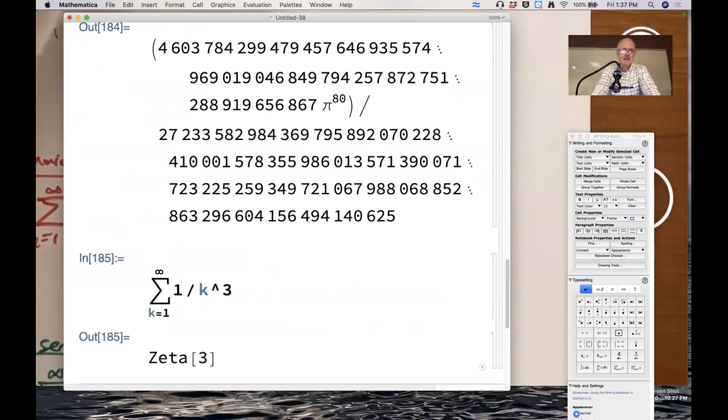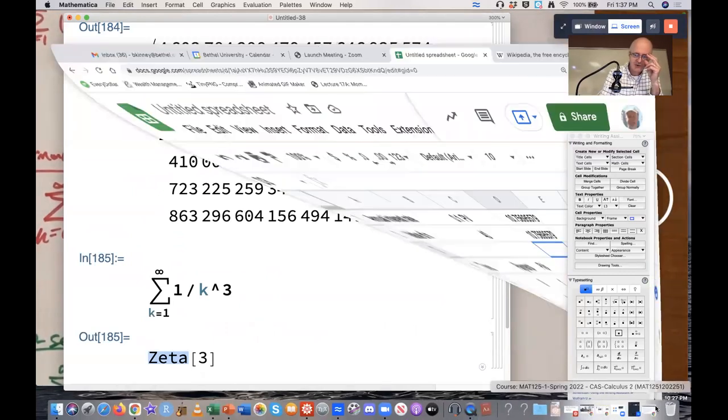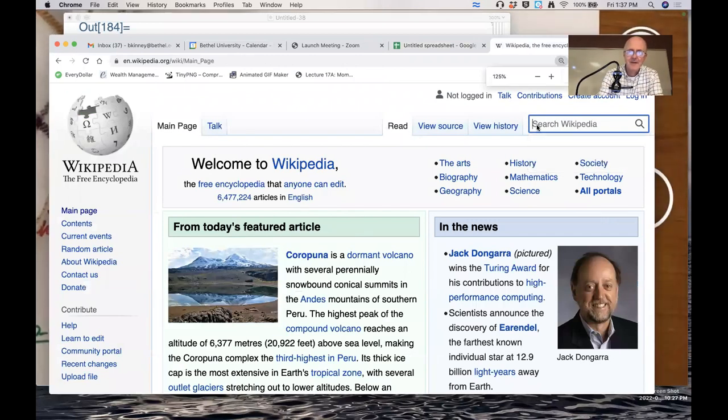Zeta of 3? What's zeta? That's just a function you've never heard of before. Surprise, surprise, surprise, new function. It's called the Riemann zeta function. I guess Riemann is the one who thought of it.